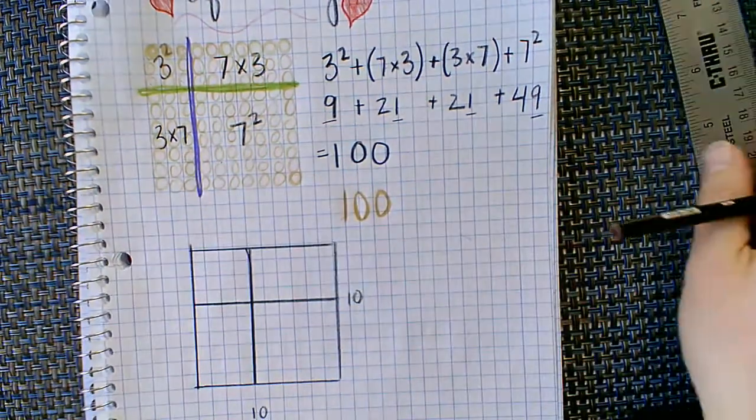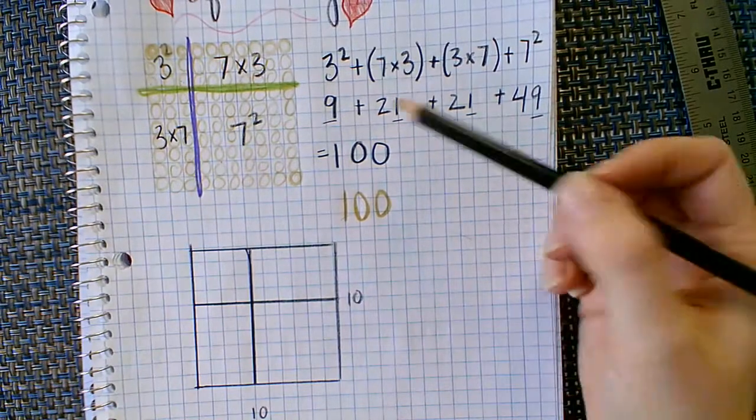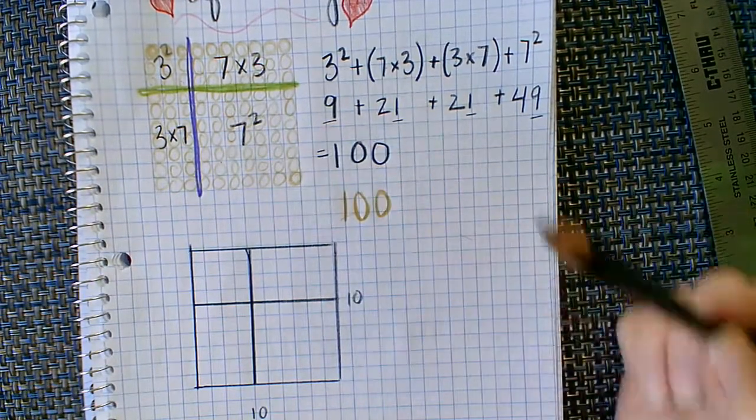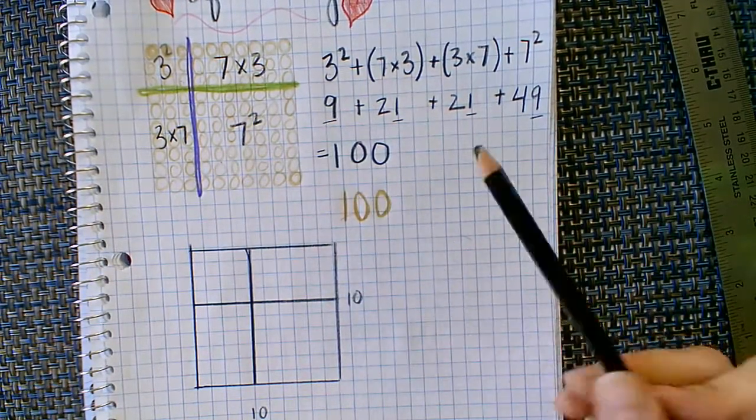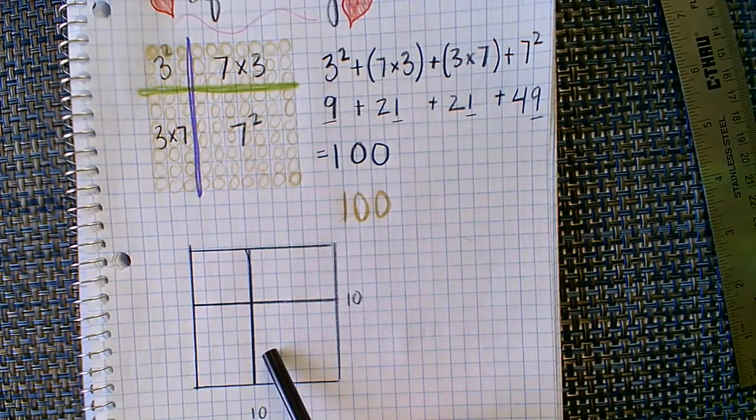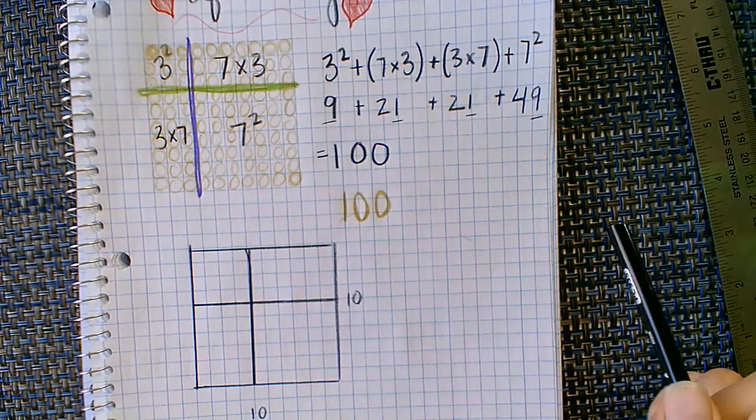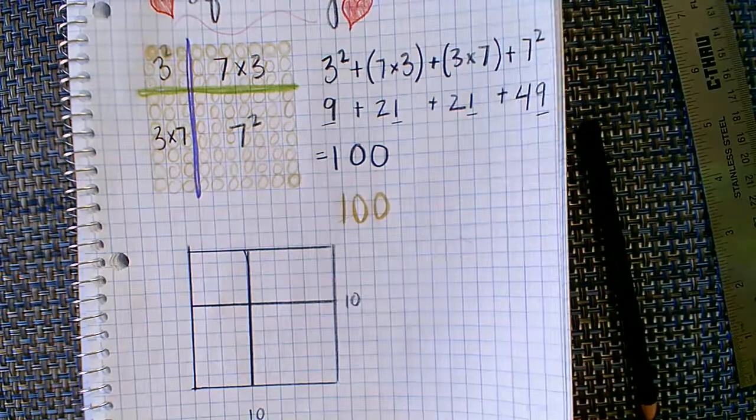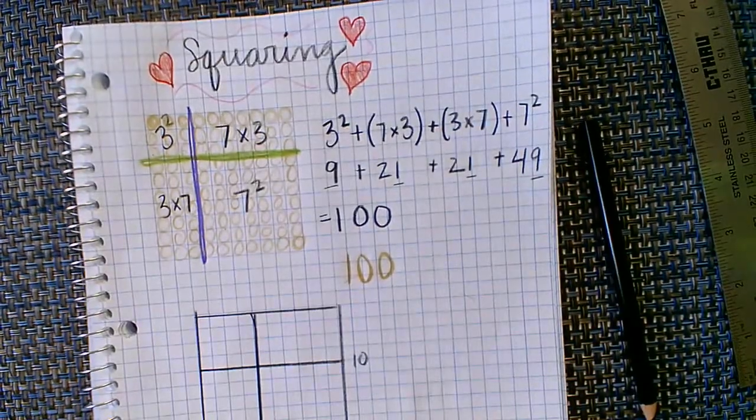And then I can label my pieces from there, just like we would if we had golden beads. But instead of golden beads, we have blue and white graph paper. We can still do this really fun work, even though we don't have some of our materials.